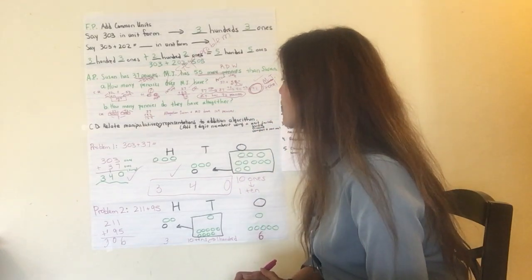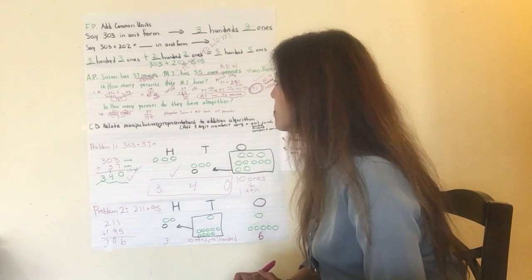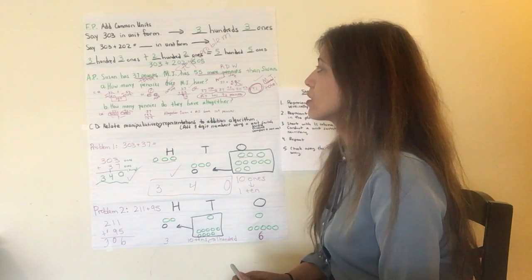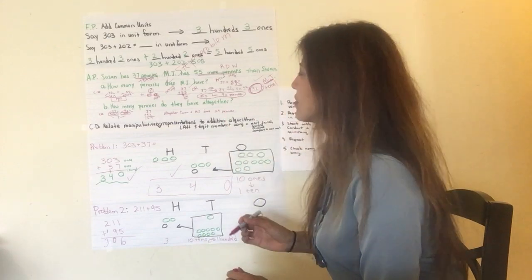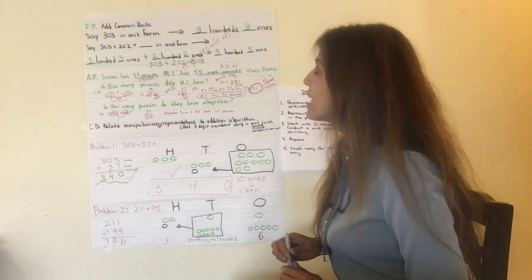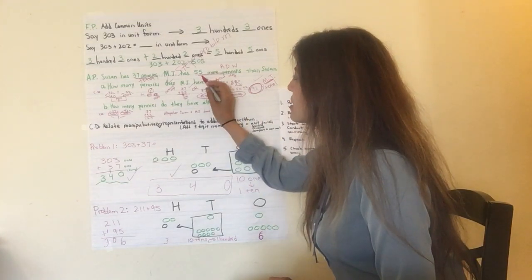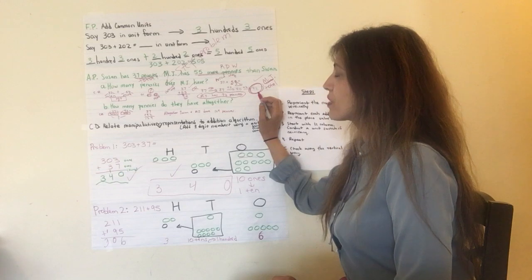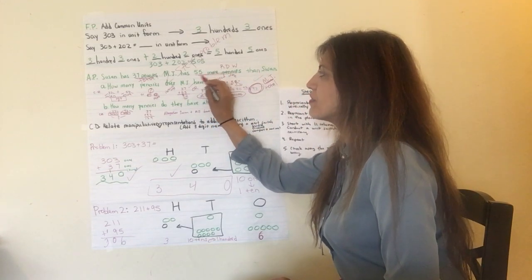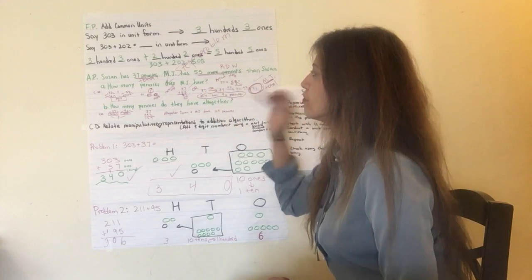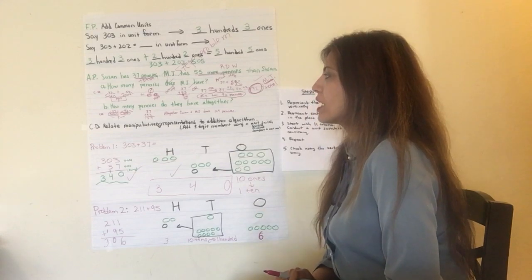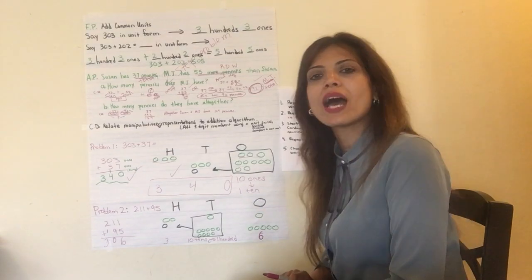How many pennies do they have altogether? How many pennies do they have altogether? Now, many of you might just, or some of you might just take the 37 and add the 55. Would that be correct? No way, Jose. And the reason why is because that is not MJ's total, right? This is MJ's total, right? This is MJ has 55 more pennies than Susan. That's all that is, that 55. But some of you might say, oh, I'm going to take the 37, I'm going to add them with the 55, and that's how I get the total. No, no, no. Do not let them trick you. You're too smart for that.